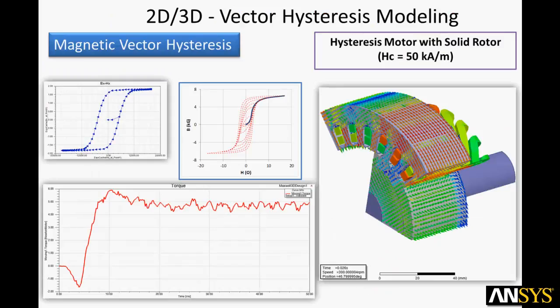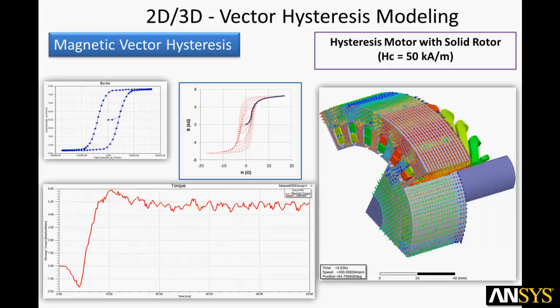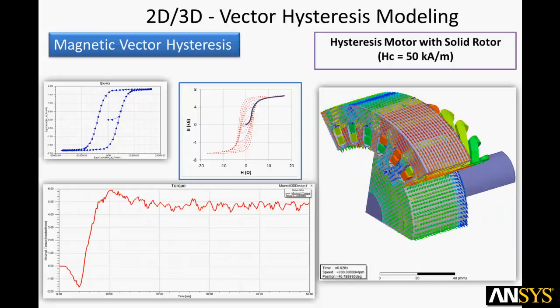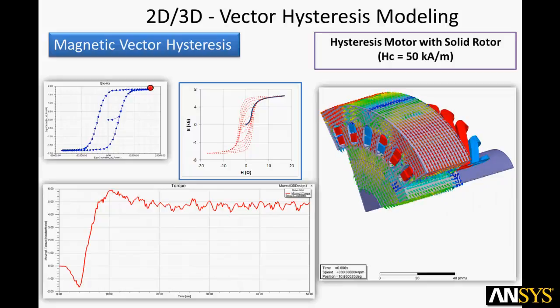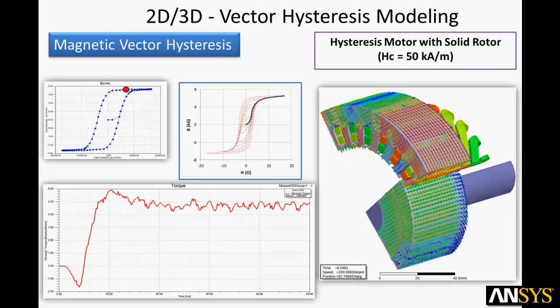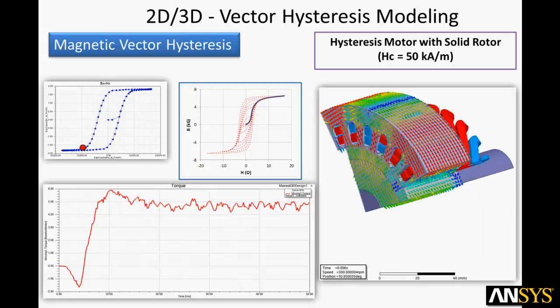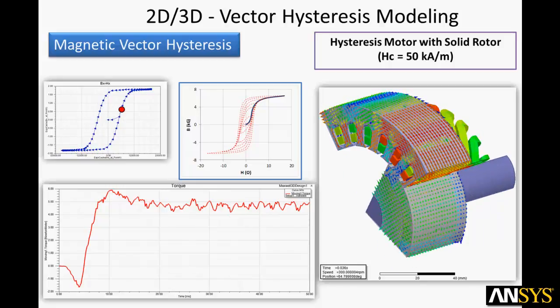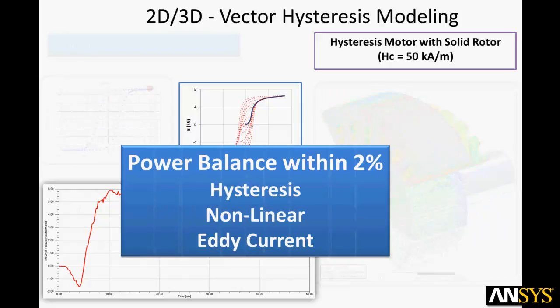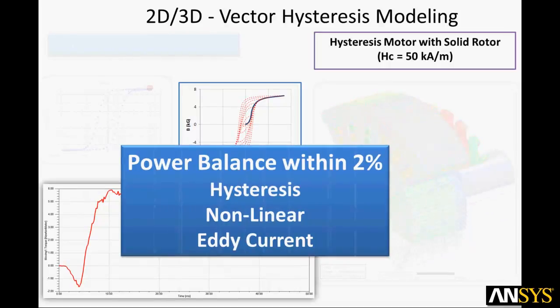Here you see an example that requires the most advanced magnetics modeling. This hysteresis motor has a solid rotor with a thin layer of ferromagnetic material that provides dynamic magnetic pole creation. This can be modeled only if the ferromagnetic material demonstrates hysteresis. Accurate prediction of motor efficiency also requires nonlinear modeling and eddy effects. A measure of accuracy is the power balance between electrical input power and the mechanical output power, including various losses.